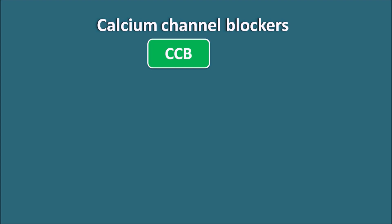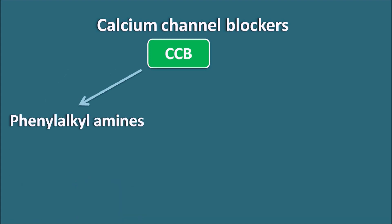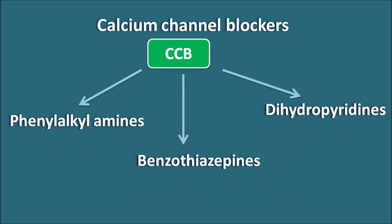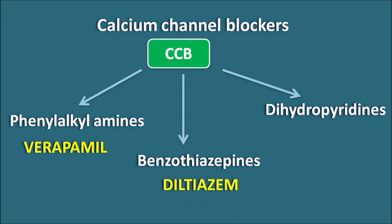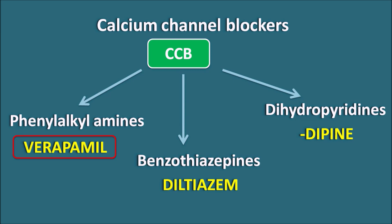Verapamil is a calcium channel blocker, commonly known as CCB. We have three types of calcium channel blockers: phenylalkylamines, benzothiazepines, and dihydropyridines. Among the phenylalkylamines, one calcium channel blocker is verapamil; within the benzothiazepines, one drug is diltiazem. The dihydropyridines include many drugs ending with the suffix '-dipine', like nifedipine, felodipine, amlodipine, and others. Today we are discussing verapamil, which belongs to the phenylalkylamines.